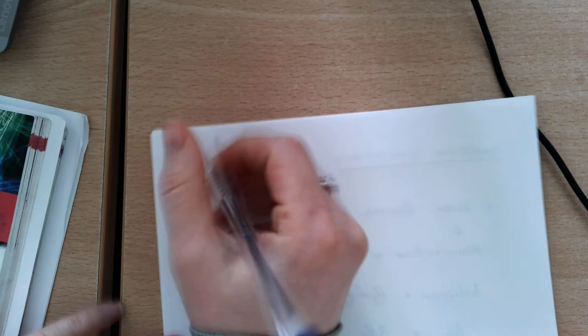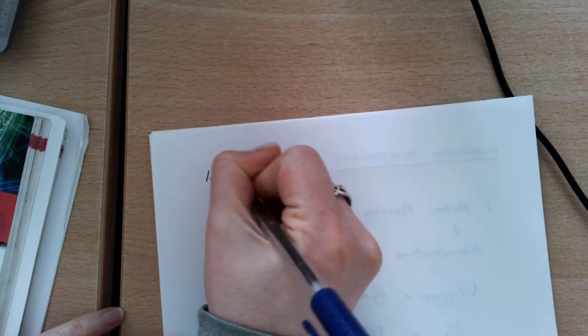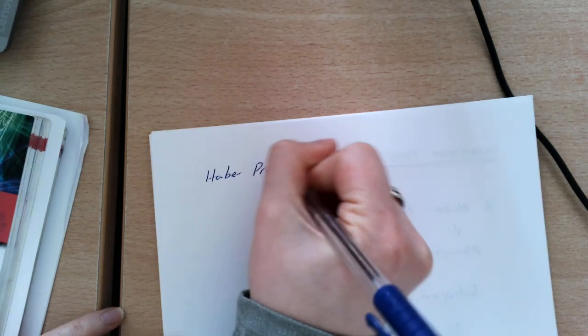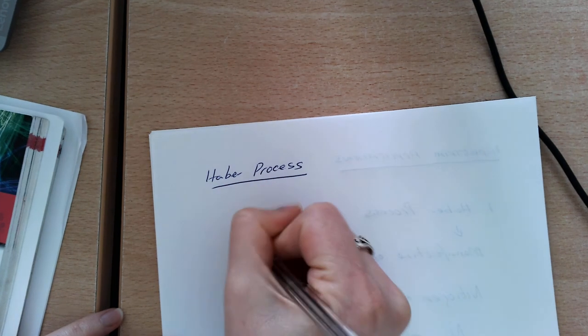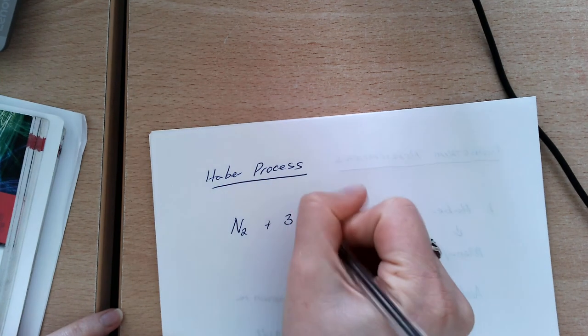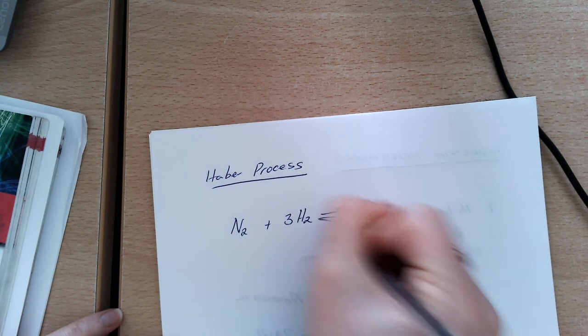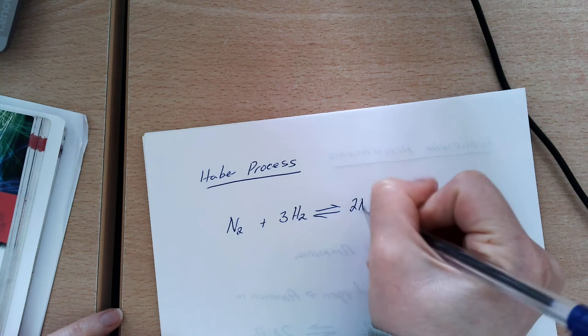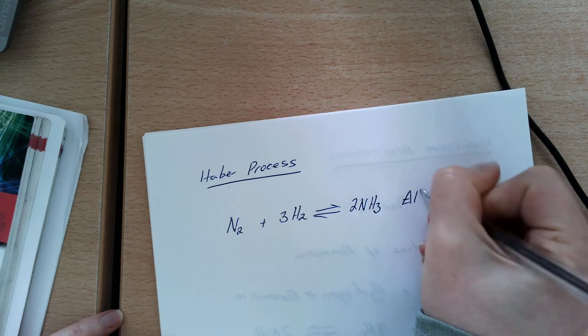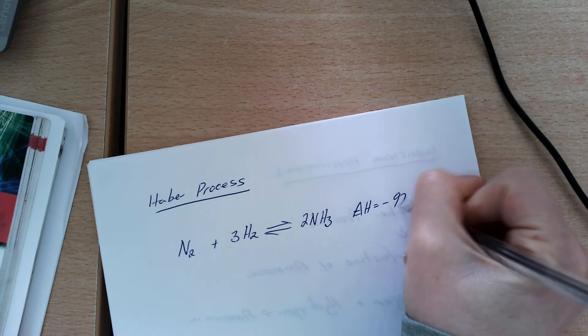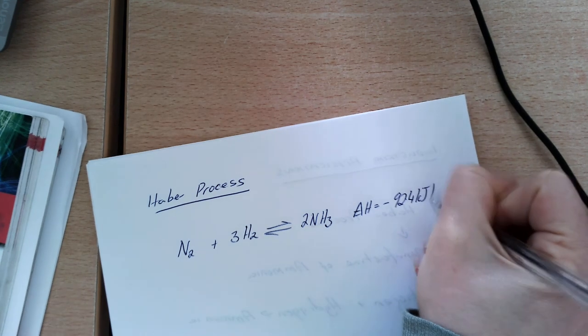What we're going to look at now is the Haber process in more detail. You need to know the two conditions in which we carry out the Haber process for the manufacture of ammonia. N₂ plus 3H₂ gives 2NH₃ with a ΔH value of minus 92.4 kilojoules per mole.